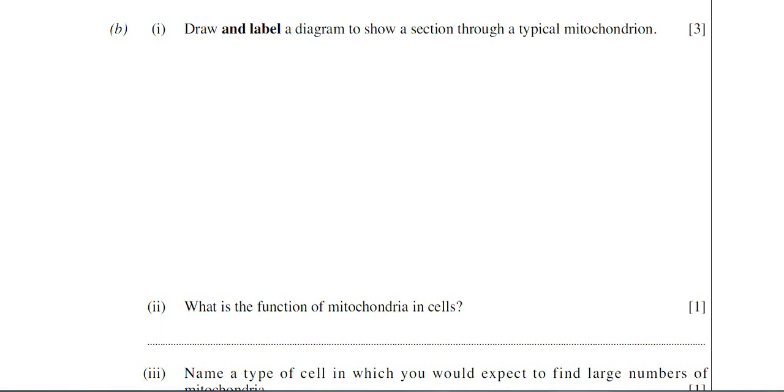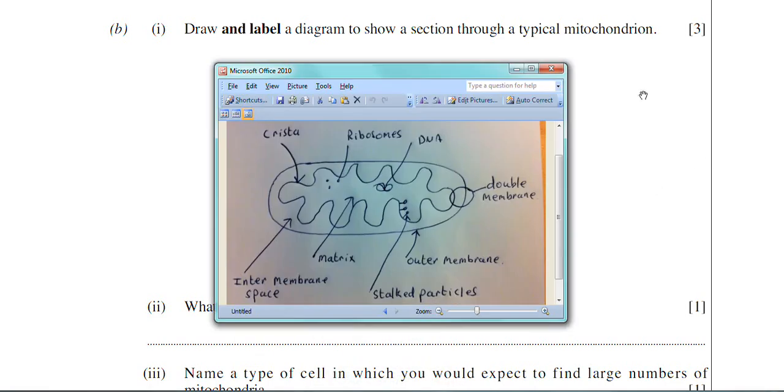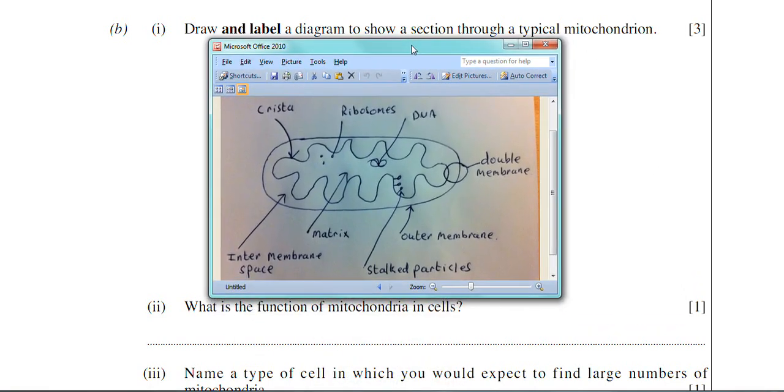So what I'm going to do is I've drawn a mitochondria, and I've scanned it in. So I'm just going to pull up the picture there of a typical diagram of a mitochondrion. Now, I hope you can see that okay. I've drawn the sausage-shaped mitochondria, which is generally the shape of mitochondria, but they're not all that shape.